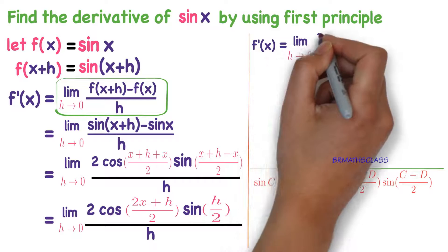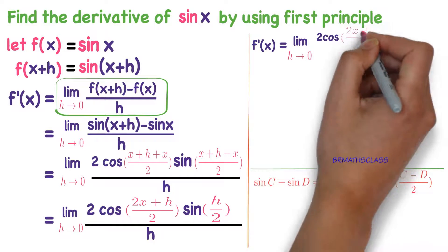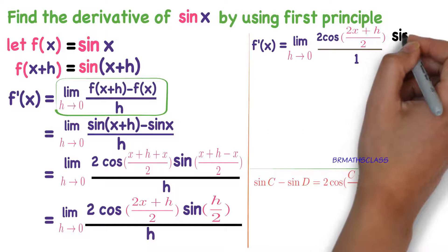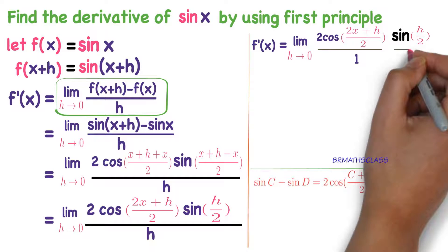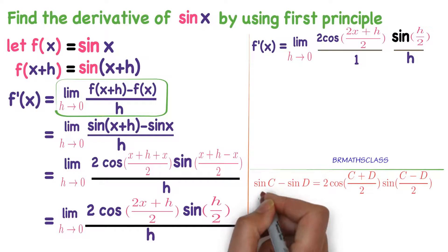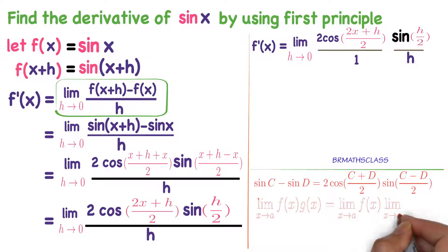The continuation step can be written as: limit h tends to 0 of 2 cos((2x+h)/2) divided by 1, times sin(h/2) divided by h. In limits, we have a standard formula which we can apply here accordingly.